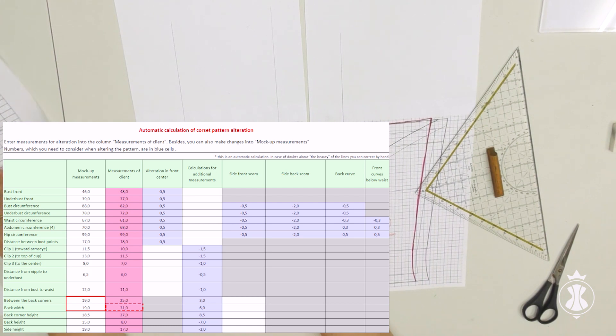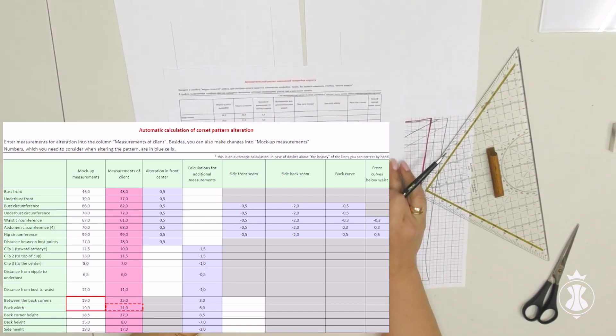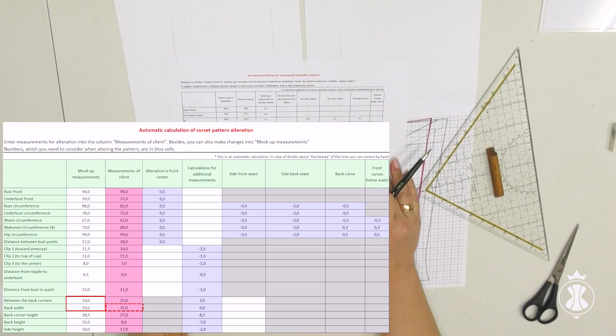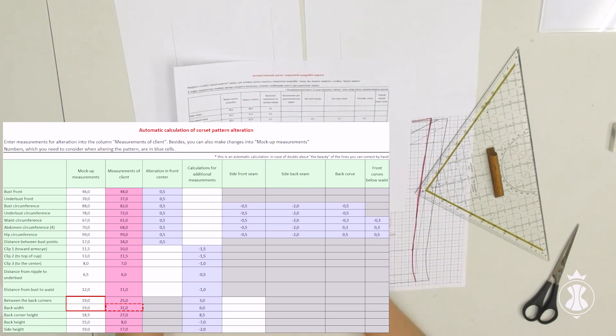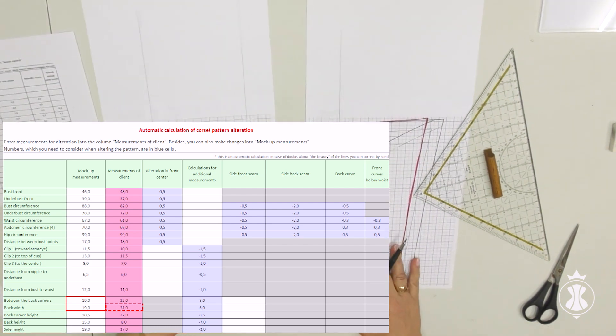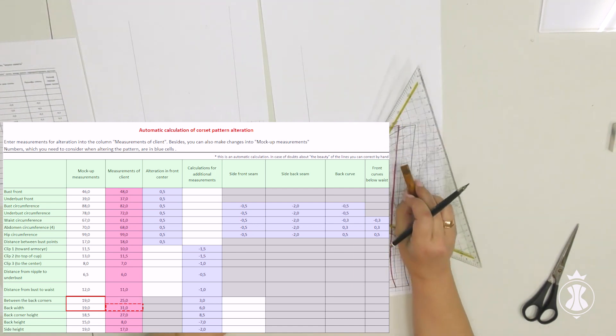This is the figure I entered into the table as the initial measurements between back corners and back width. All the calculations will be based on this number. I reviewed this point in my previous courses and YouTube free tutorials. I will repeat it again. We have absolutely exact automatic calculation.